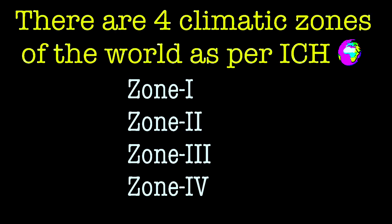As per ICH, the world has been divided into four main stability climatic zones: zone 1, zone 2, zone 3, and zone 4.